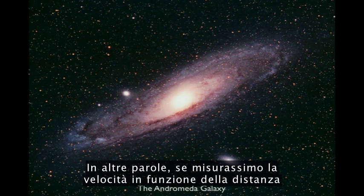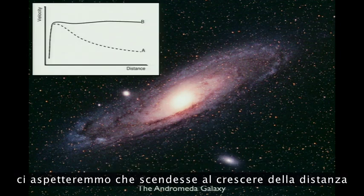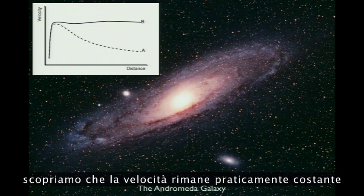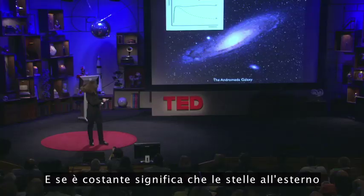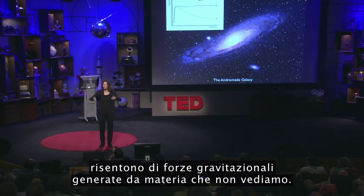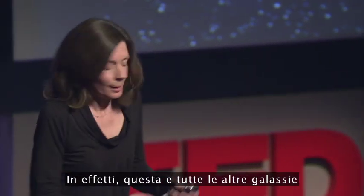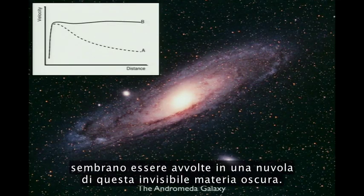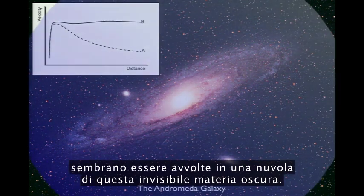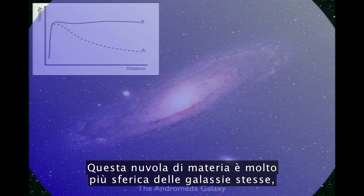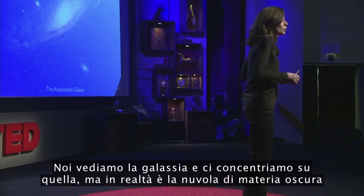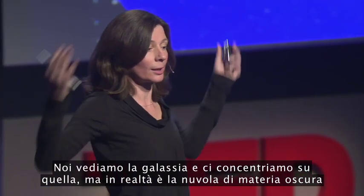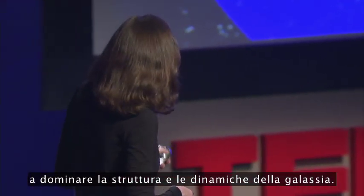If we measured speed as a function of distance — this is the only time I'm going to show a graph — we would expect that it goes down as the distance increases from the center of the galaxy. When those measurements are made, instead what we find is that the speed is basically constant as a function of distance. If it's constant, that means that the stars out here are feeling the gravitational effects of matter that we do not see. In fact, this galaxy and every other galaxy appears to be embedded in a cloud of this invisible dark matter, which is much more spherical than the galaxy itself and extends over a much wider range.